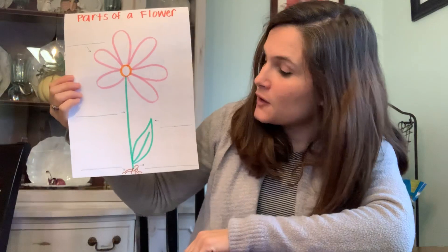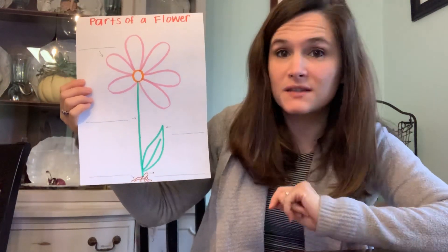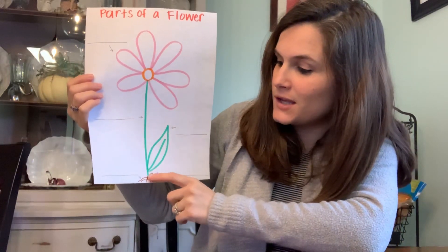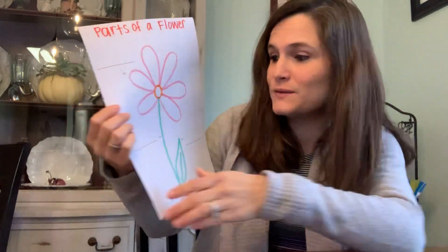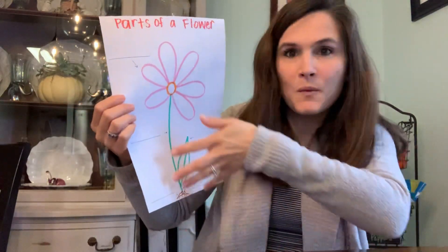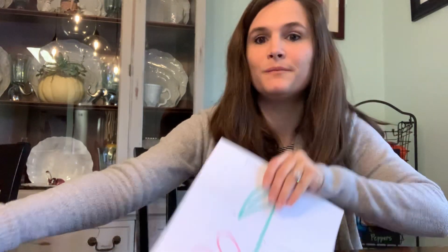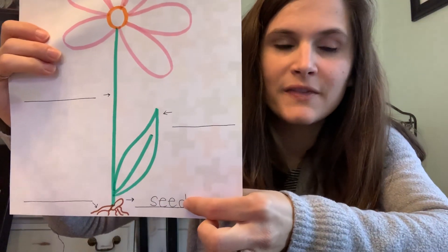I'm going to start down here at the bottom, because this is how all plants and flowers start. That's this little round guy down here — that's what we plant in the ground before we have all of this up here. And that is our seed. I'm going to put 'seed' right here on this line.